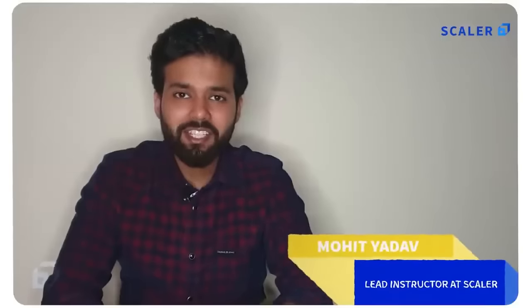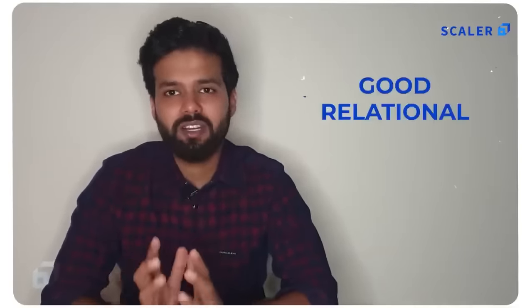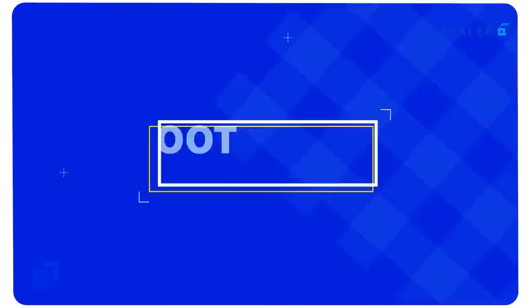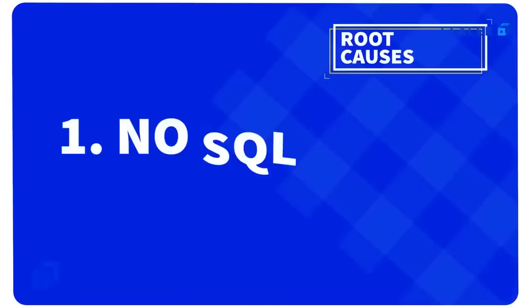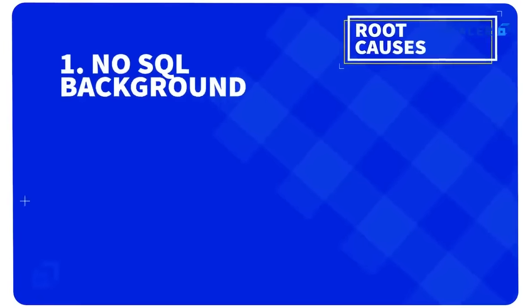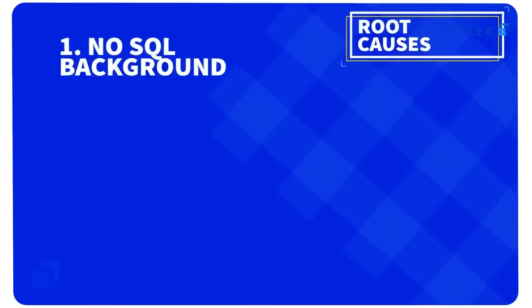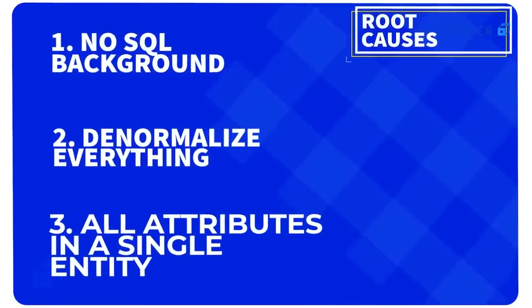Hi, I'm Mohit Yadav and I teach at Scalar Academy. After taking more than 200 interviews, I've come to a realization that most people lack one common trait: the ability to design a good relational database. The root cause is that many people come from a NoSQL background and hence they try to denormalize everything and put all the attributes in a single entity. Therefore, it becomes very critical to understand the basic fundamentals of schema design.